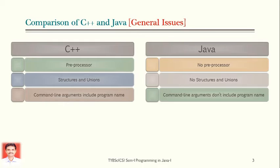If you see pre-processing — what is pre-processing? Before compilation starts, pre-processors process some pre-processing statements. Macro is one example; a macro is processed or executed before compilation starts. This concept existed in C++, but in Java, this pre-processor concept is totally removed.